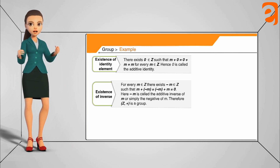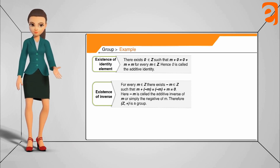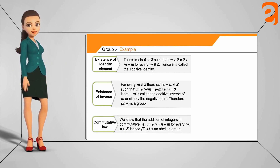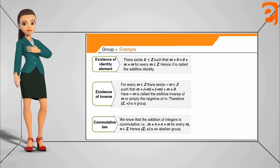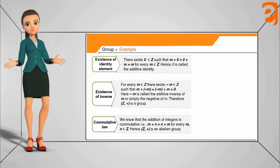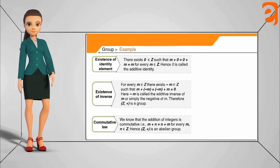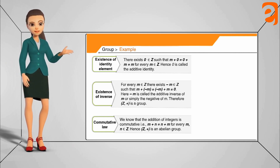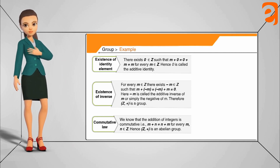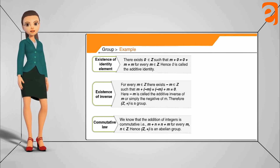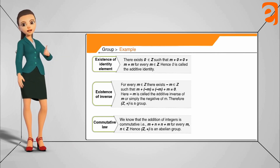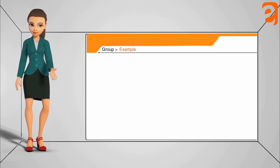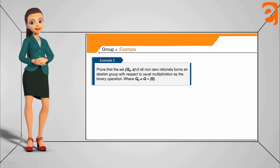We have shown that Z with addition satisfies all four group properties. Now for commutativity: for any m, n in Z, m + n equals n + m, which is clearly true — adding 1 + 2 or 2 + 1 always gives the same result. Therefore, the set Z with the binary operation addition is not just a group but an abelian group.